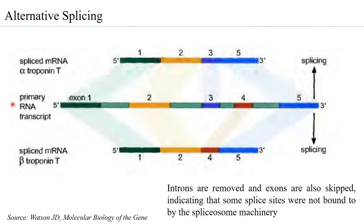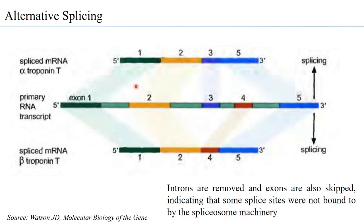What has been observed for troponin T is that one splicing mechanism leads to exon 4 also being spliced out — that is, exon 4 is skipped — while the other alternative splicing mechanism leads to exon 4 being retained but exon 3 being skipped. In both transcripts all introns are removed, but one or the other exon is skipped. Therefore the proteins obtained are different, although they may be isoforms — both associated with muscle contraction but with different functionalities.